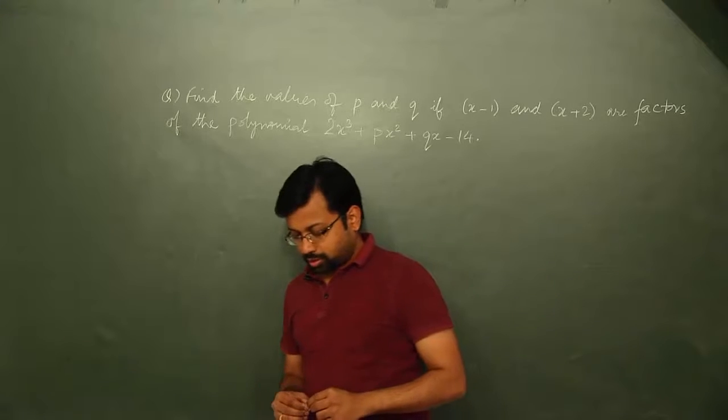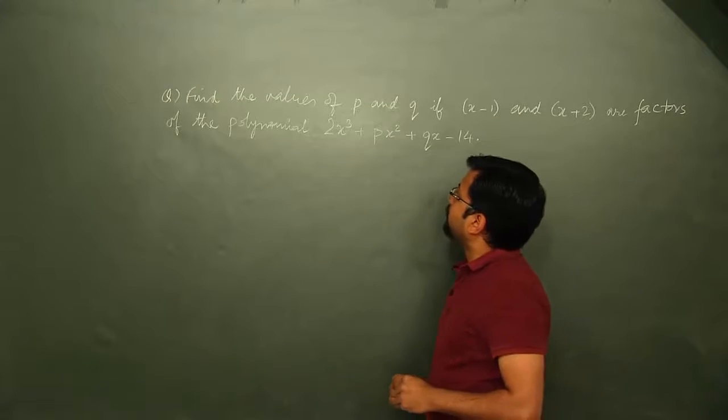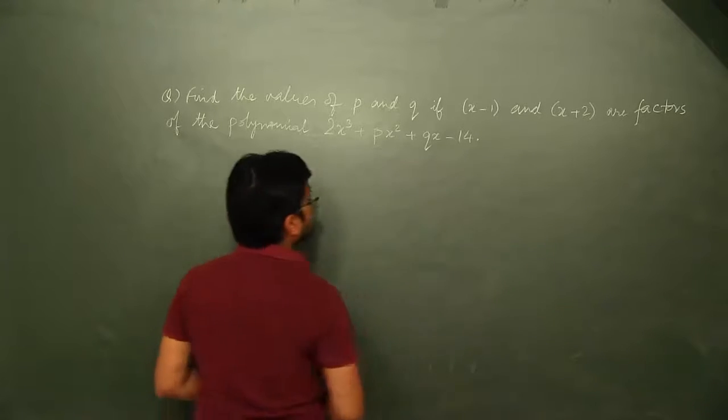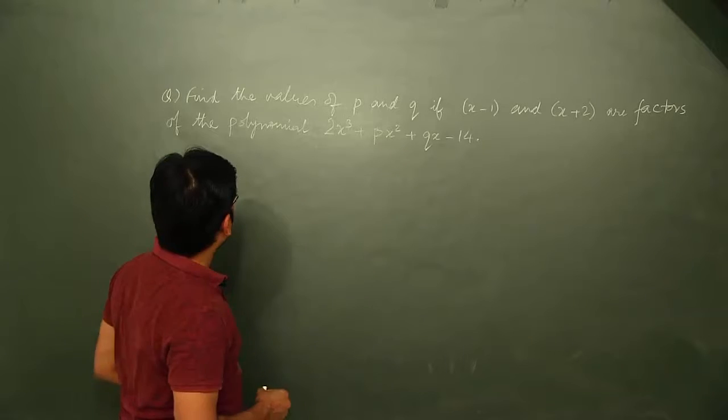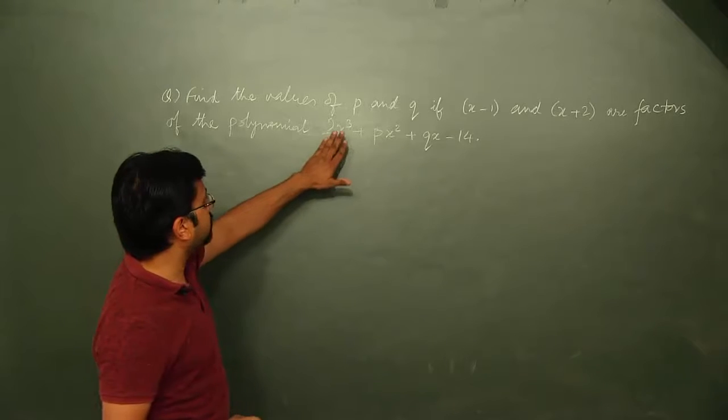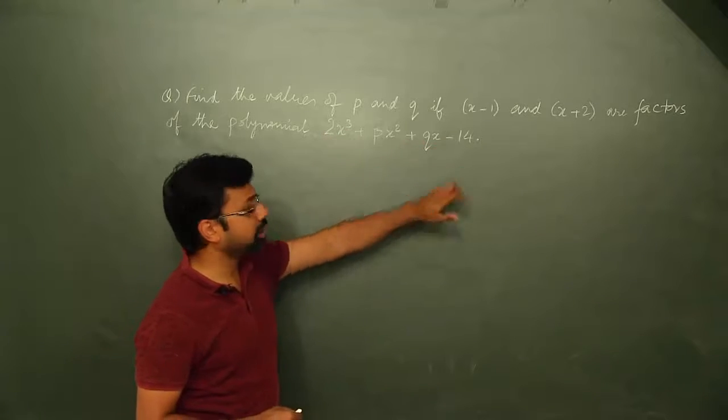Now, what does this question say? It says, find the values of p and q if x minus 1 and x plus 2 are factors of the given polynomial 2x cubed plus px squared plus qx minus 14.